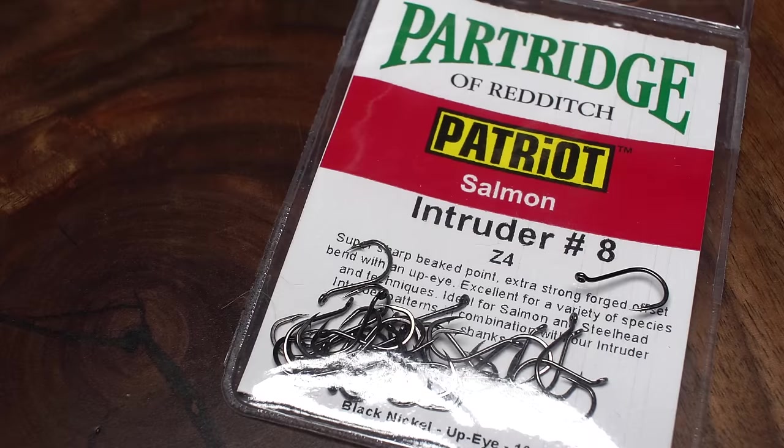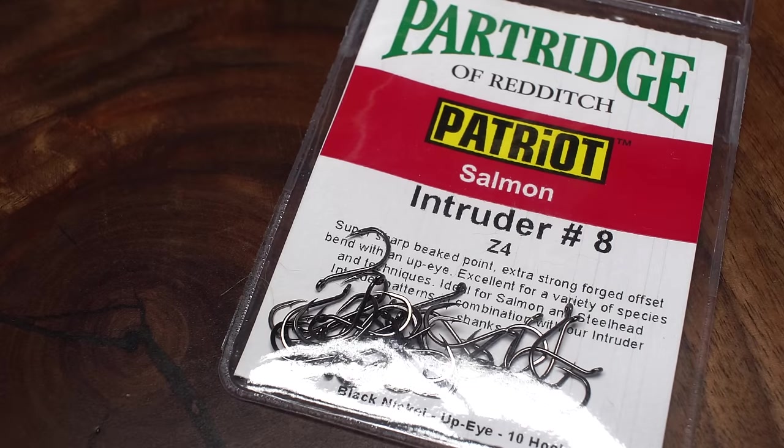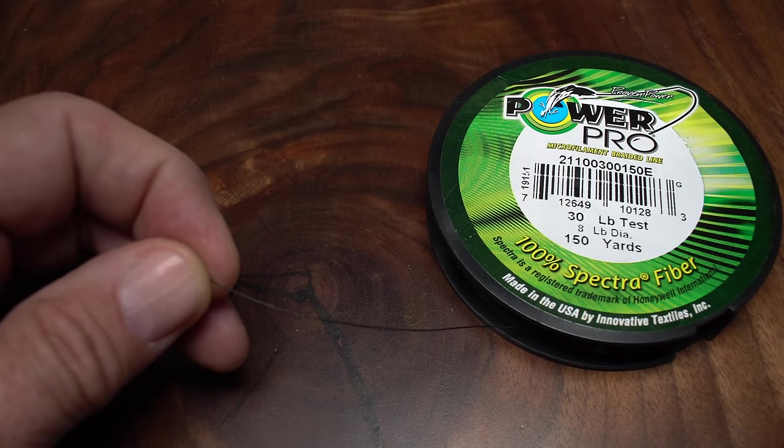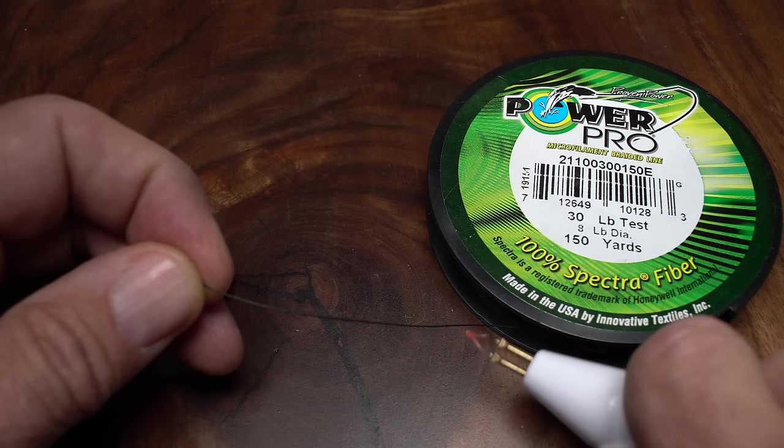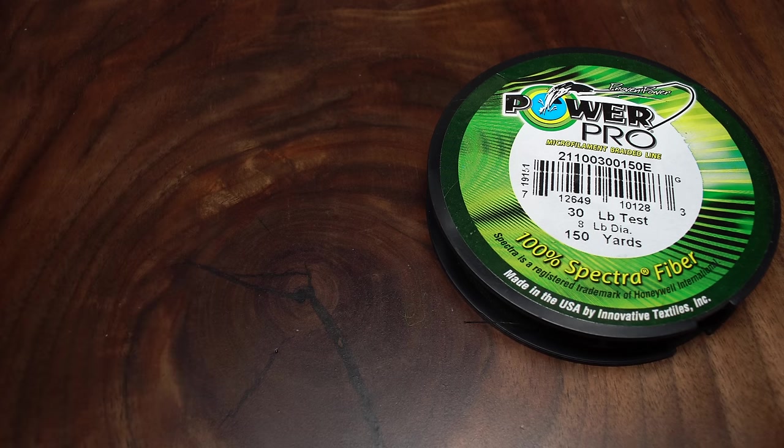For a hook, I'm going to go with a Partridge Z4 Intruder in size 8. They're super sharp and have a slight offset for holding power. You can use intruder wire if you like, but I prefer 30 pound braided line for securing the hook to the shank. A cauterizing tool makes cutting off a three inch length an absolute breeze.